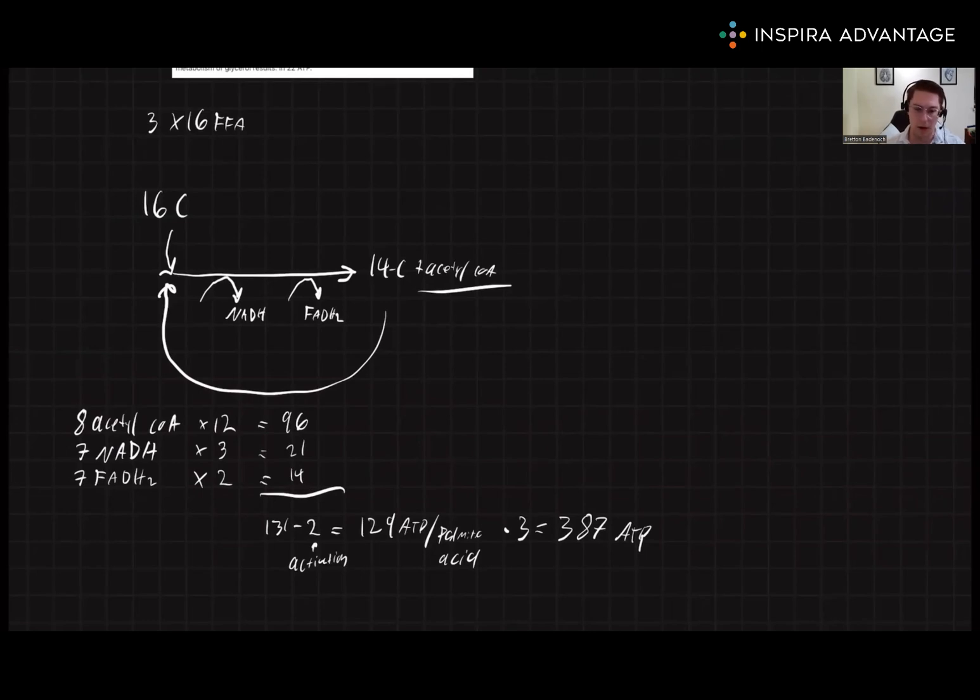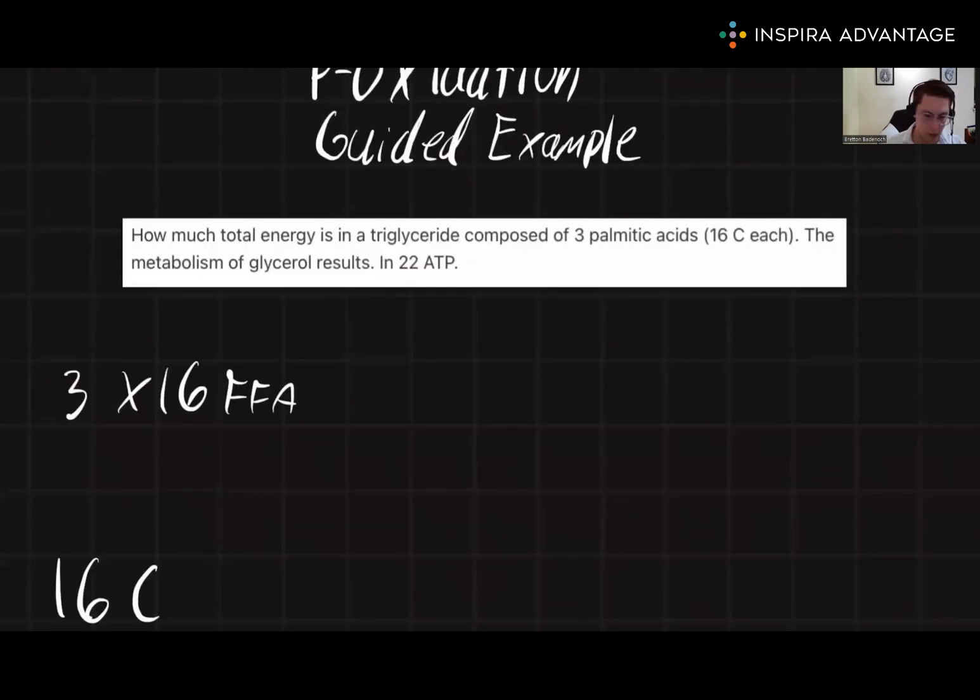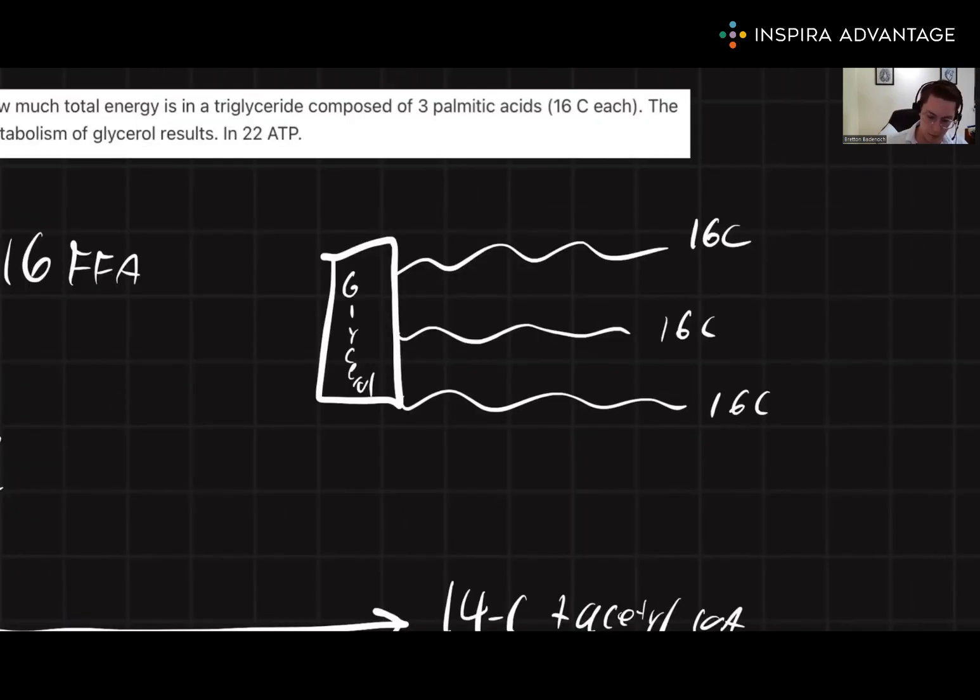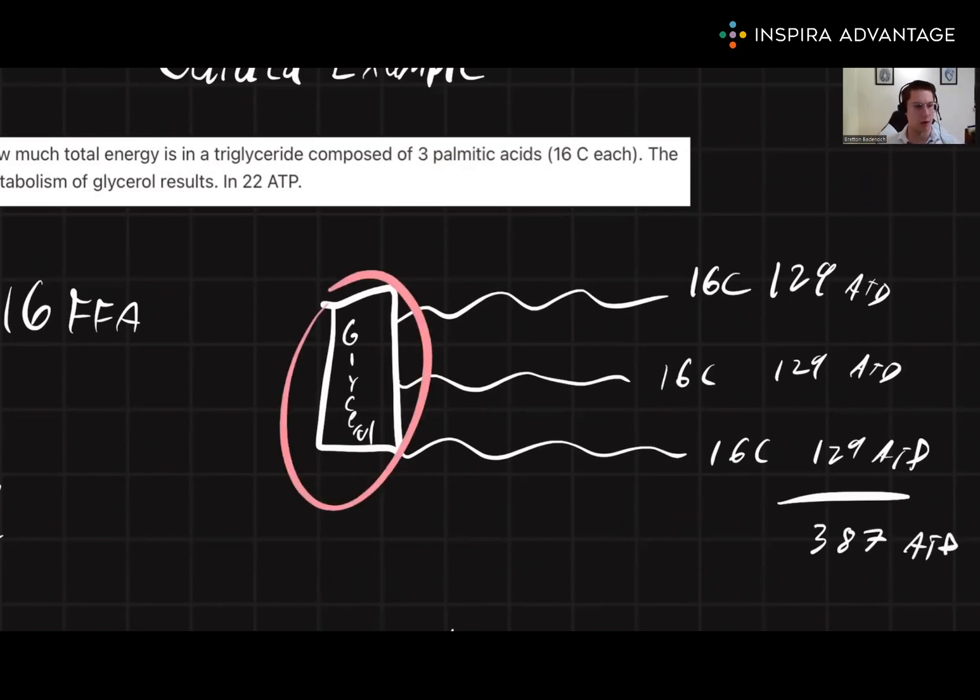But we need to remember that there is a glycerol. So just to draw a sketch out of what this problem is talking about, we have a triglyceride. So we have this glycerol backbone. And we have three fatty acid tails, each one 16 carbons long. And we found out each of these carbons is worth 129 ATP for the net of 387 ATP. But we have not yet addressed the glycerol component.